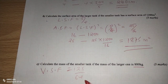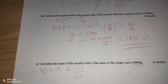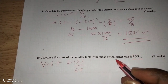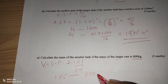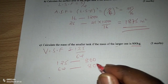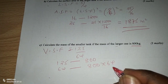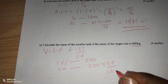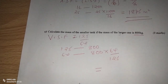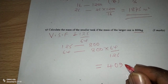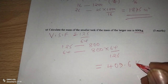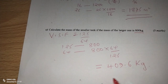The volume scale factor in its simplest form was 125 over 64. Since the larger tank corresponds to 125 and has a mass of 800 kilograms, we find what 64 will have: 800 multiplied by 64 divided by 125. When you compute this you get 409.6 kilograms. So 409.6 kilograms is the mass of the smaller tank.